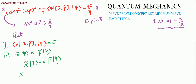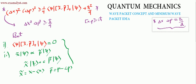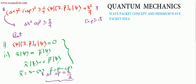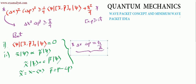Remember: x̃ was defined as x minus the expectation value of x, and p̃ was defined as p minus the expectation value of p. Only when these two conditions are satisfied do we have the minimum Heisenberg uncertainty product, Δx·Δp = ℏ/2.